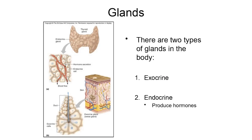I want to talk about some basic anatomy before we get too deep into the endocrine system — specifically an endocrine gland versus an exocrine gland. You've already learned about some glands in the body: we talked about sweat glands and oil glands in the skin back in the integumentary system. Sweat glands and oil glands are examples of exocrine glands because both of these gland types release their product into a duct.